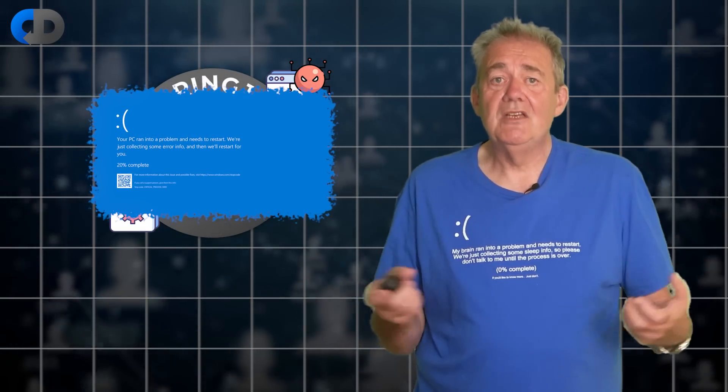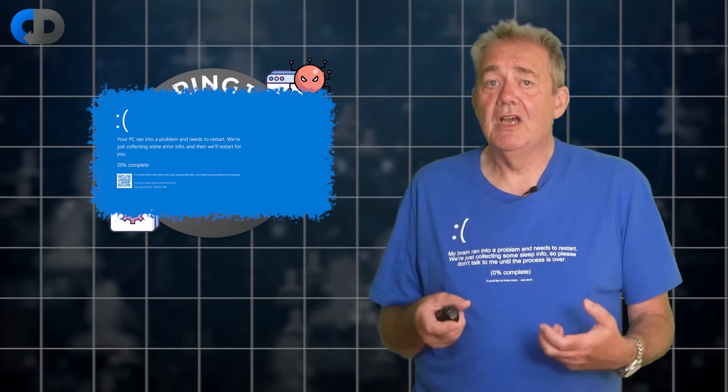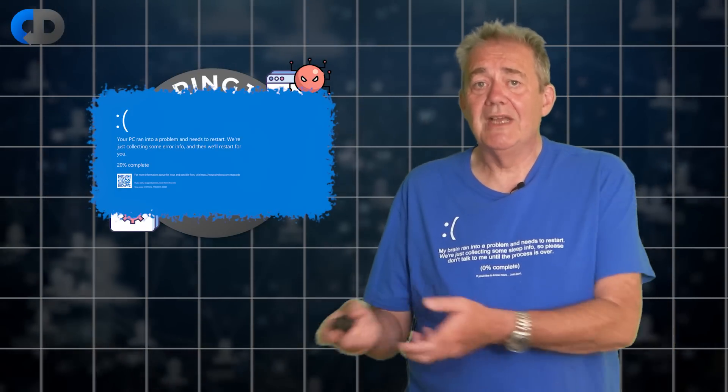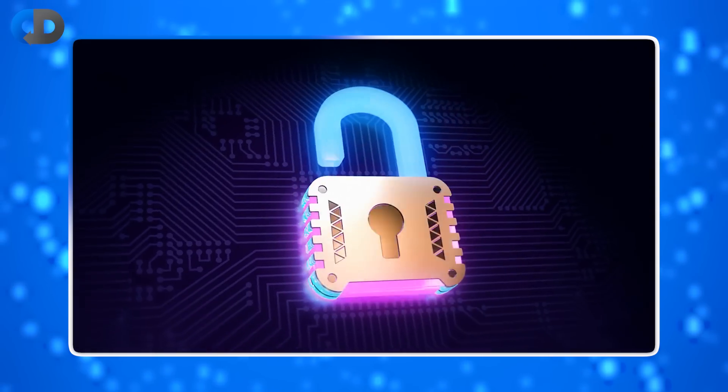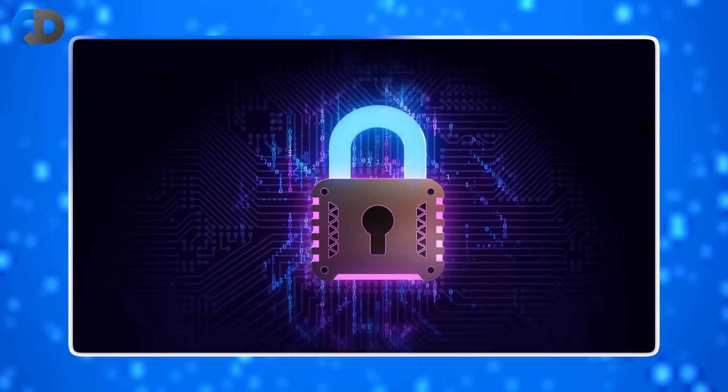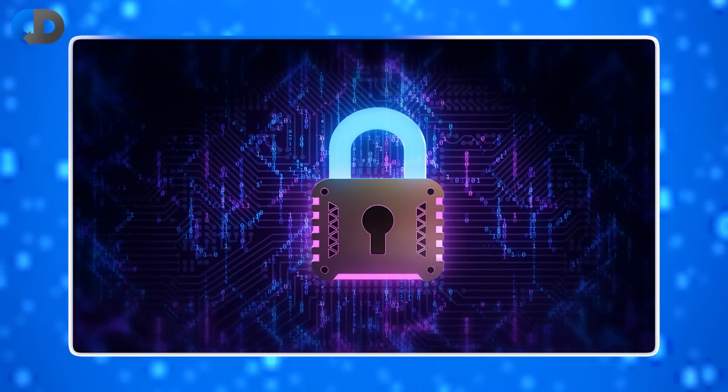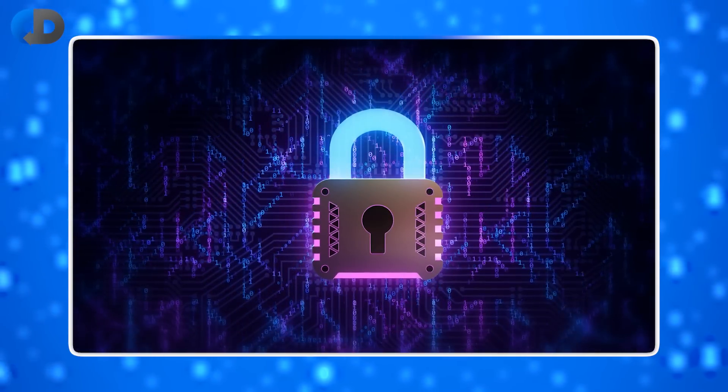This design choice completely bypasses the safeguards that were put in place by Microsoft to protect us from ring 0 code failures. So on July 19th, they released one of these patch files that contained a mistake.